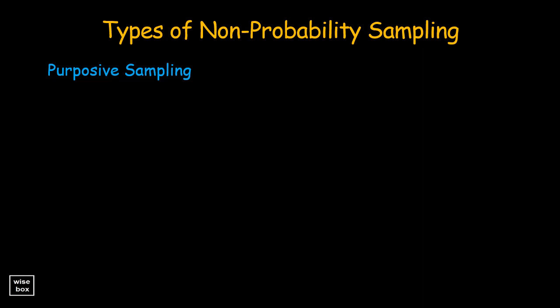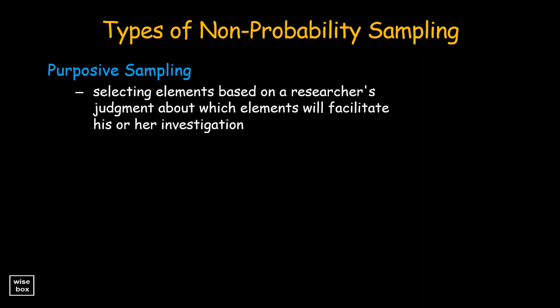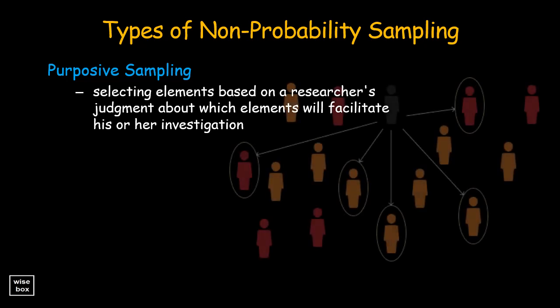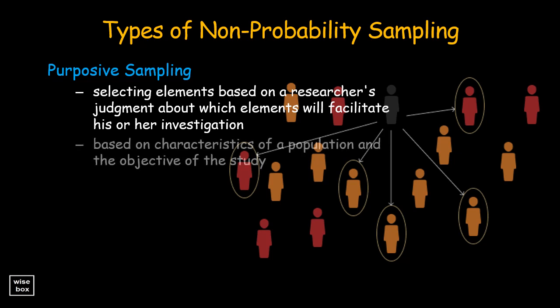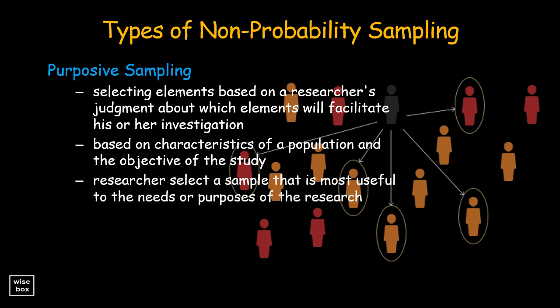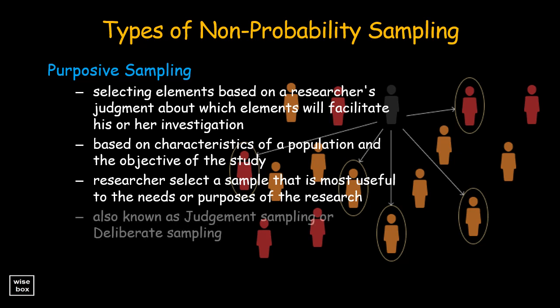Purposive sampling is a non-probability sampling procedure that involves selecting elements based on a researcher's judgment about which elements will facilitate his or her investigation. It involves selecting based on characteristics of a population and the objective of the study. The researcher uses their expertise to select a sample most useful to the purposes of the research. It is also known as judgment sampling or deliberate sampling.